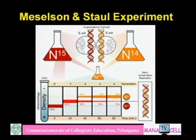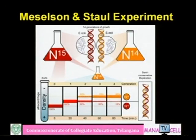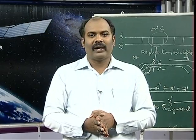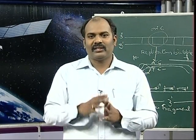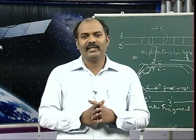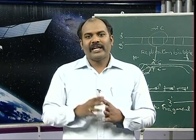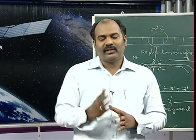Watson and Crick, who determined the DNA structure, proposed that the double helix also supports a semi-conservative mode of replication. Semi-conservative replication means that in the old DNA with two strands, each strand synthesizes one new strand. Upon separation, each daughter DNA contains one old strand and one new strand, forming two sets of DNA. This was experimentally proven by Meselson and Stahl — an experiment called the Meselson-Stahl experiment, considered one of the most beautiful experiments in biology.